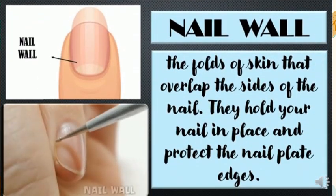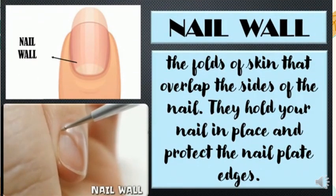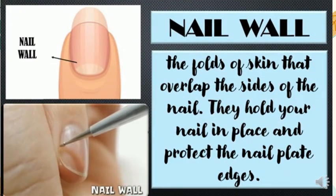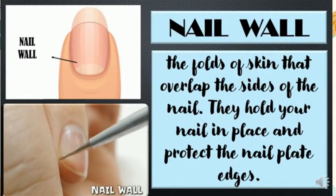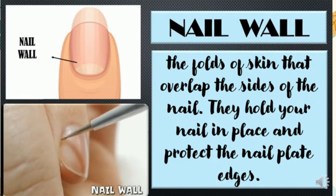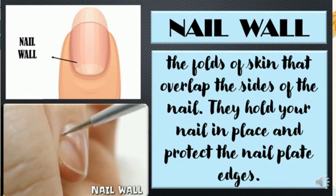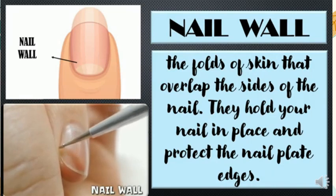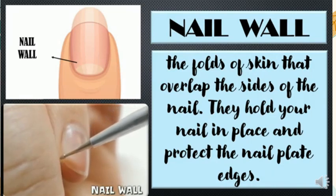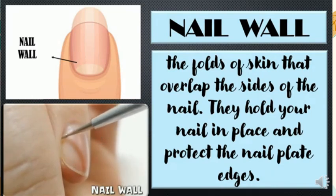Nail wall — the folds of skin that overlap the sides of the nail. They hold your nail in place and protect the nail plate edges.